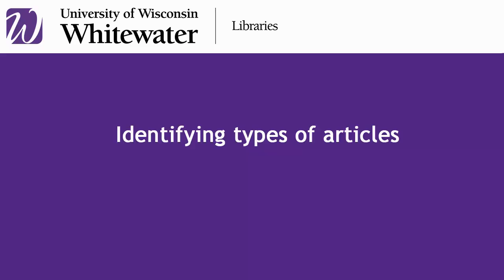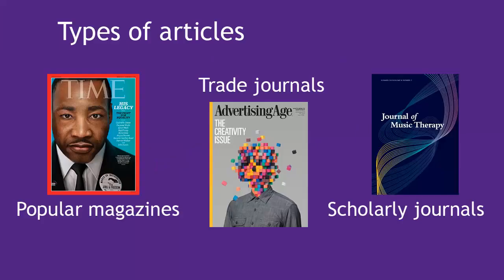This video will help you identify the different types of articles you might find while doing research: popular, trade, and scholarly sources. These are all types of articles you might find in UW-Whitewater Library databases. They are each useful for different things, so it's important that you are able to identify the differences between them.